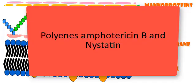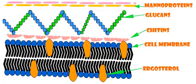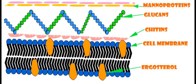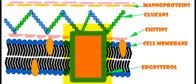Let's start with polyenes — amphotericin B and nystatin. Polyenes are molecules with both hydrophilic and lipophilic characteristics. They bind to ergosterol, a sterol specific to fungal cell membranes, and cause the formation of artificial pores, which allows electrolytes and small molecules to leak out of the cell, leading to cell death.